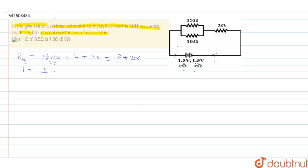Now the current will be 3 volt divided by the equivalent resistance, that is 8 plus 2r. So this is the value of current of the circuit.